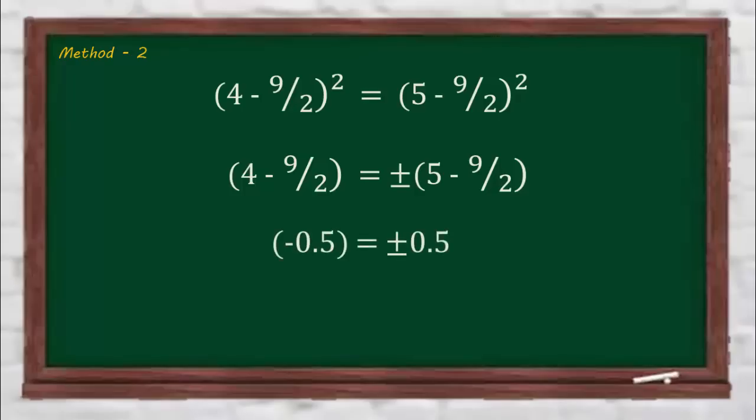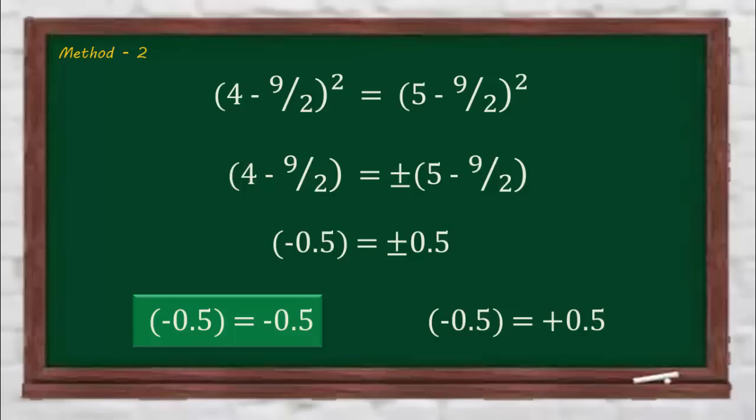On simplifying, we get minus 0.5 is equal to plus minus 0.5. Out of these, only one equation is correct. But while proving 2 plus 2 is equal to 5, we indirectly took the wrong equation.